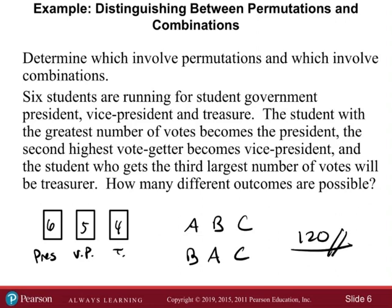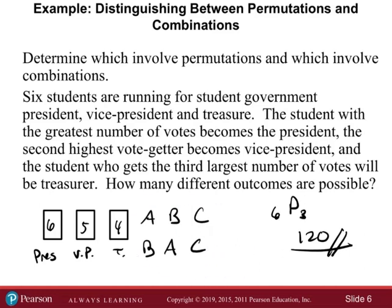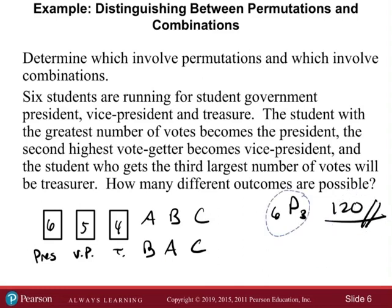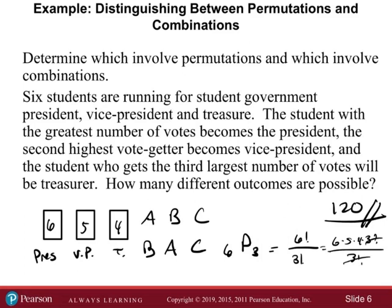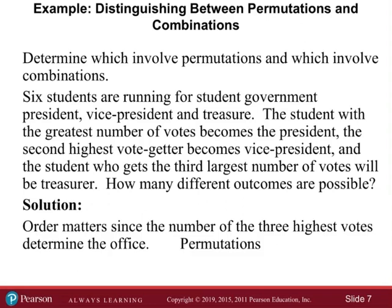We used the permutation 6P3. Using the formula, 6P3 equals 6 factorial over (6 minus 3) factorial, which is 3 factorial. That gives us 6 times 5 times 4 over 3 factorial — so 120 possible outcomes. For this one, the order is important, so changing the order is counted as something different. When order is important, we do a permutation.